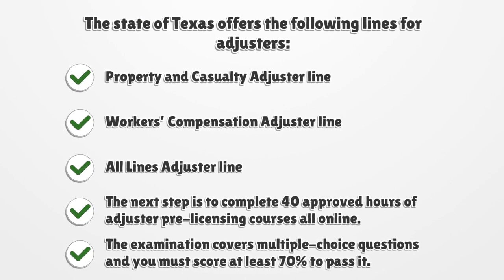The next step is to complete 40 approved hours of adjuster pre-licensing courses, all online. The examination covers multiple choice questions and you must score at least 70% to pass.